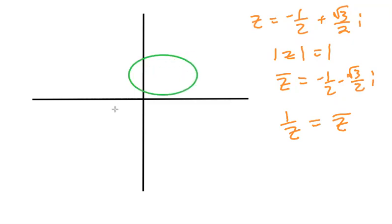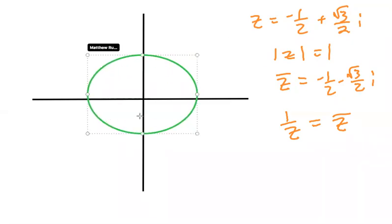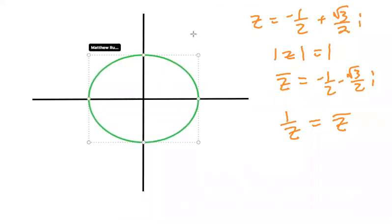So what's going on here, let me draw a circle here. So suppose that this is the circle of radius one.